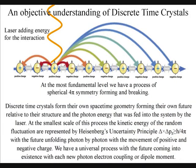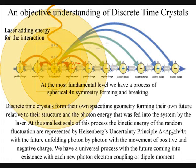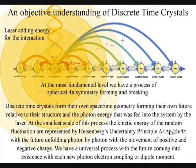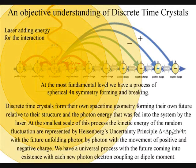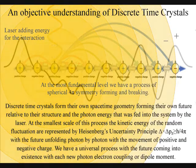Discrete time crystals form their own space-time geometry, forming their own future relative to their structure and the photon energy that was fed into the system. At the smallest scale of this process, the kinetic energy of the random fluctuations are represented by Heisenberg's uncertainty principle, with the future unfolding photon by photon, with the movement of positive and negative charge.